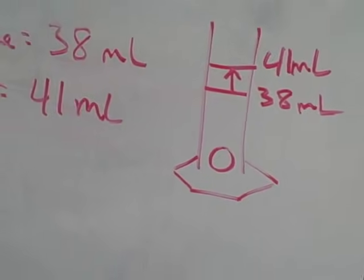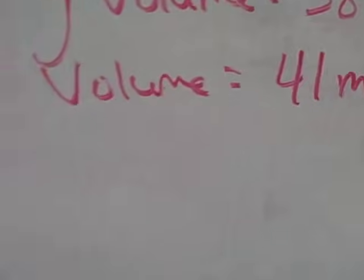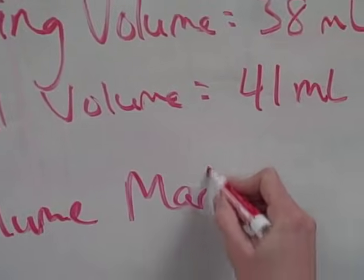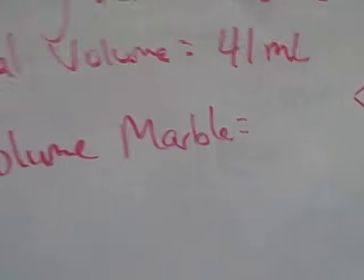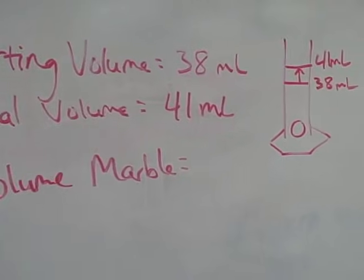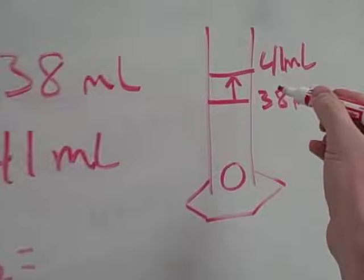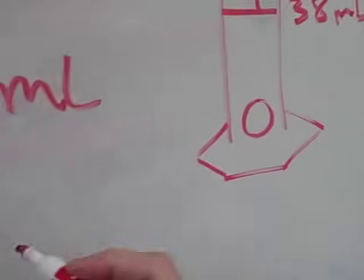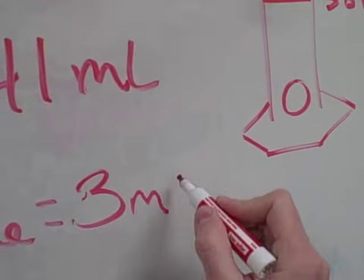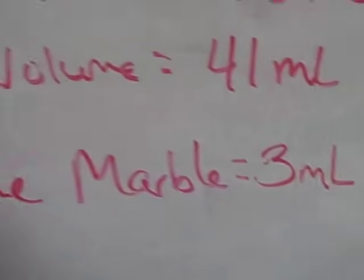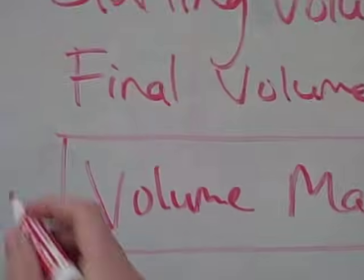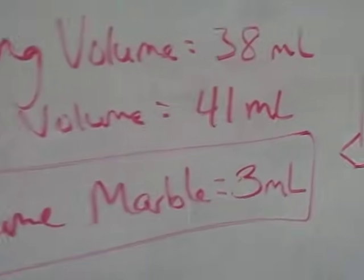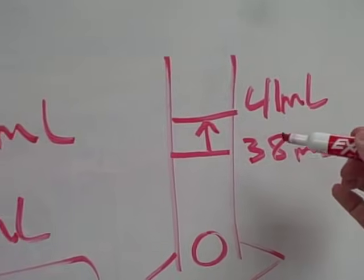So what is the volume of the marble? Well, to find the volume of your irregular object, you just simply subtract those two numbers. Because that's going to tell you how much water was displaced. This went up 3 milliliters. So that must be the volume of what you placed in there. So you just take your final volume minus your initial volume.